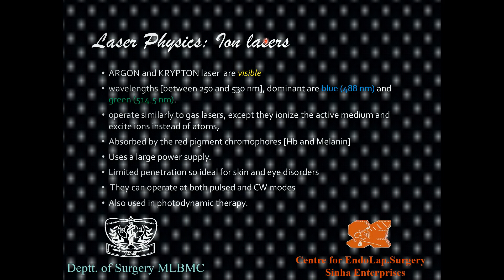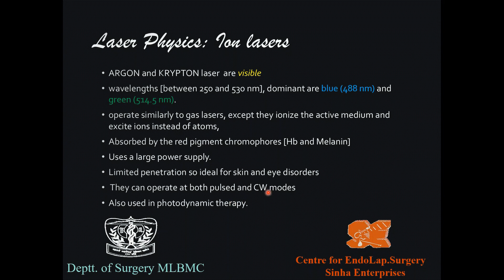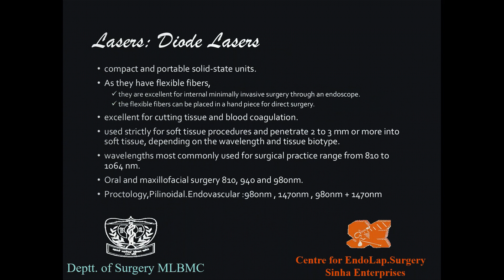The ion (argon/krypton) laser is a visible light gas laser with wavelengths of 250–530 nm, dominant at 488 nm (blue) and 514 nm (green). These ionize the active medium and excite ions rather than atoms. They are absorbed by red pigment chromophores like hemoglobin and melanin. With limited penetration, they are ideal for skin and eye disorders, can operate in pulsed or continuous mode, and can be used for photodynamic therapy.